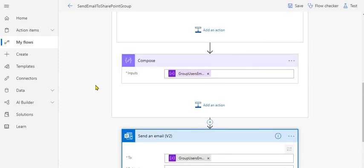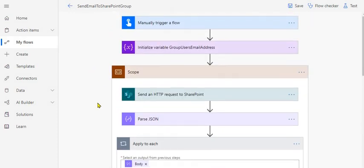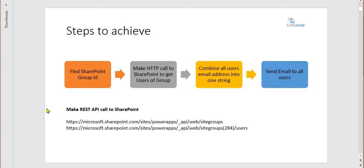So the approach is: make an HTTP call to get users from the SharePoint group, combine their email addresses into a string variable, and then send an email to that string. These are the two endpoints to use: `_api/web/sitegroups` to get the group ID, and `_api/web/sitegroups/{ID}/users` to get all users in the group.